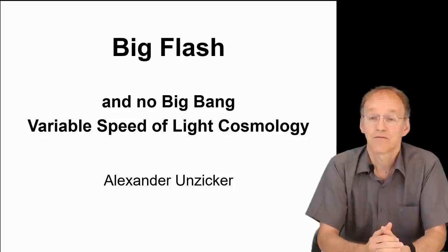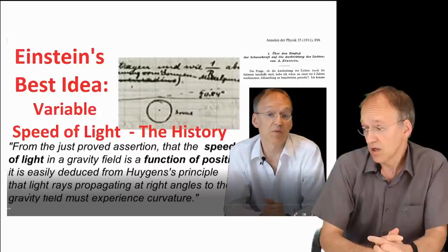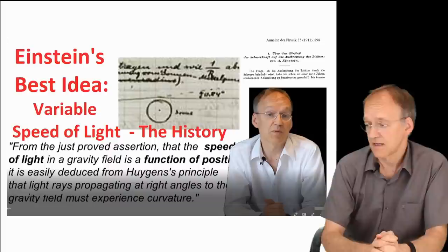Why are we talking about variable speed of light at all? Because it was Einstein's very first idea when he thought about general relativity, and in fact general relativity can be explained equivalently with variable speed of light.